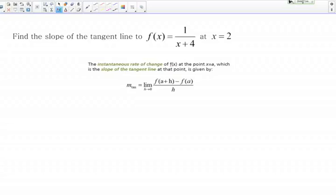To do that, we want to use the definition shown here below. The slope of the tangent line is given by the limit as h goes to 0 of f of a plus h minus f of a over h. That's the slope of the tangent line at the point x equals a.